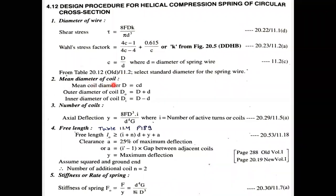Once you have the wire diameter, find the mean diameter of the coil. From the spring index formula, C is the ratio of mean diameter of the coil divided by the diameter of the spring wire. Rearranging, mean diameter D equals C times d. C is given and d was calculated in the previous step, so substitute to get the mean coil diameter.